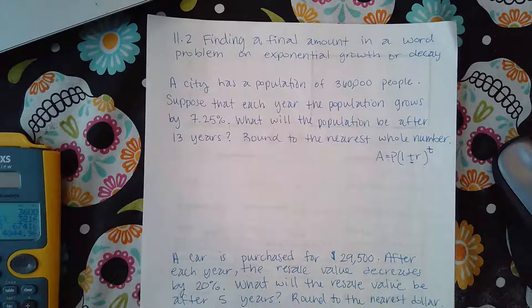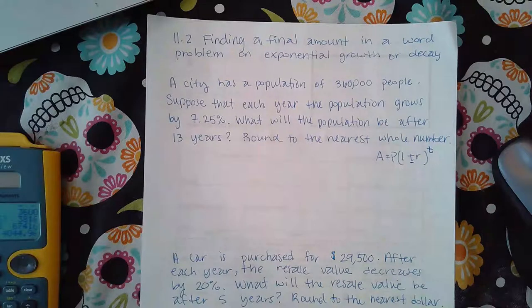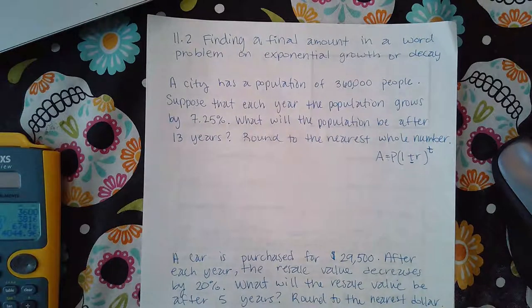Suppose that each year the population grows by 7.25%. What will the population be after 13 years? Round to the nearest whole number.